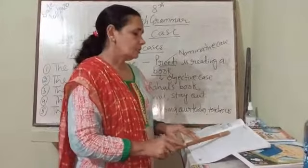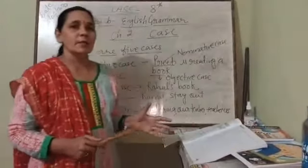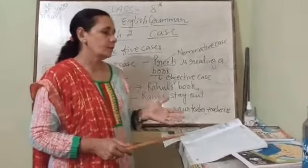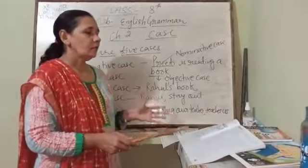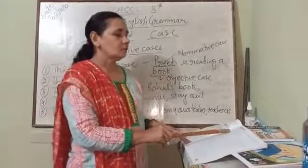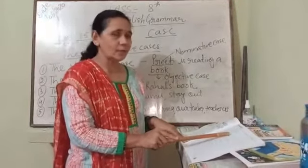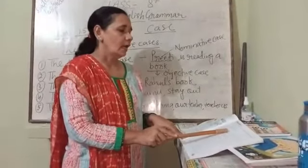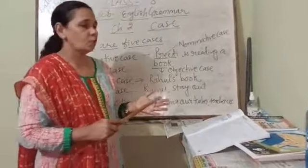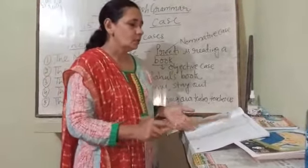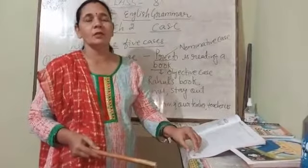The second sentence is: 'They brought us glory.' Now identify which noun or pronoun is which case. 'They' is in the place of subject, so it is nominative case, and 'glory' is in the place of object, so it is objective case. This way you have to complete the exercise on page 17.